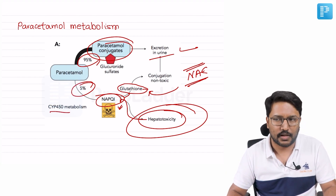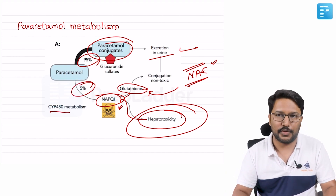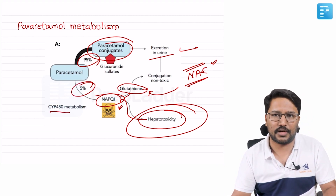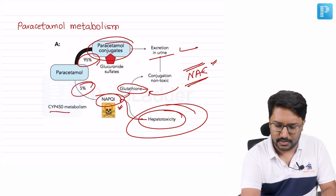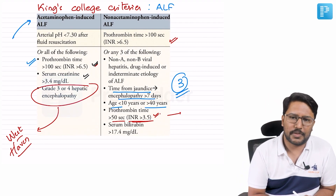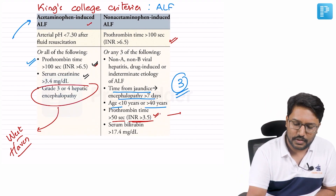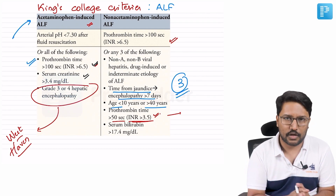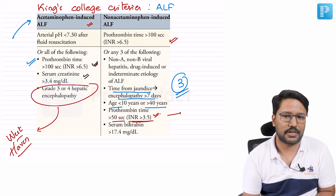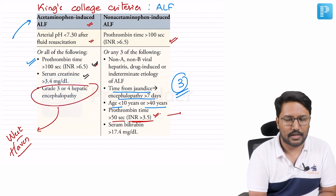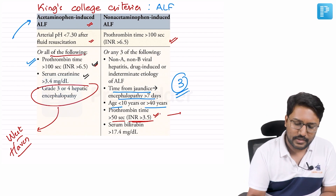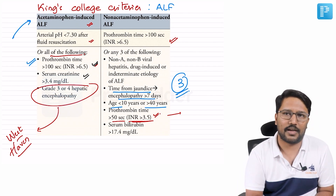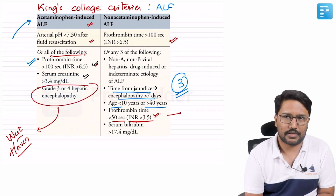If acute liver failure has already set in and it is mild, N-acetyl cysteine and supportive care may suffice. But if severe — as defined by King's College Criteria — liver transplantation is needed. Specifically: a pH less than 7.30 despite adequate fluid resuscitation alone is an indication. If pH is fine, then all three of the following must be met: INR more than 6.5, creatinine more than 3.4 mg/dL, and grade 3 or higher hepatic encephalopathy. Meeting these criteria indicates the need for liver transplantation.